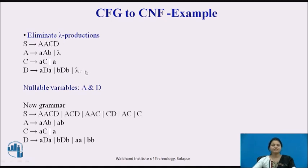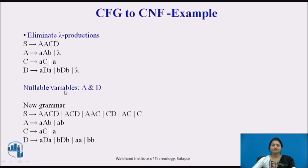Here we check for null productions and eliminate any that are present. In this grammar, A and D have null productions — A produces null and D produces null. So A and D are the nullable variables.